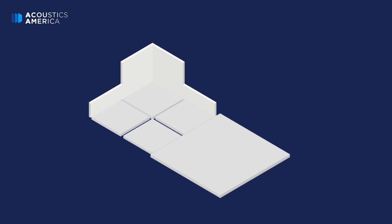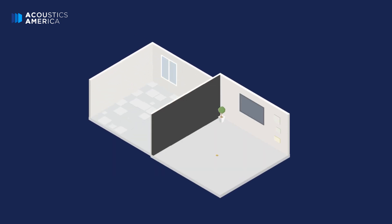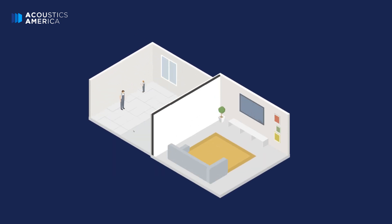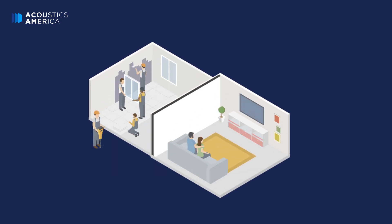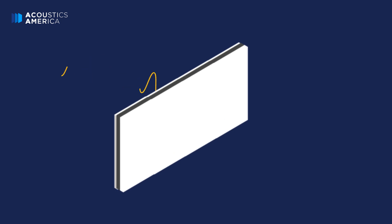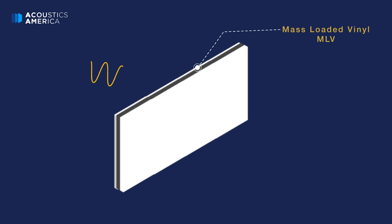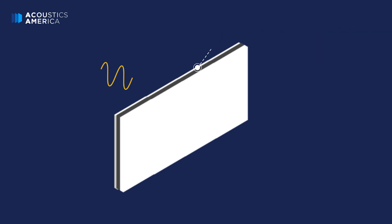If you have a noisy neighbor, you'll need to employ sound blocking materials to solve your noise issue. The most popular sound blocking material is mass-loaded vinyl, installed in a wall or contained within barrier panels.